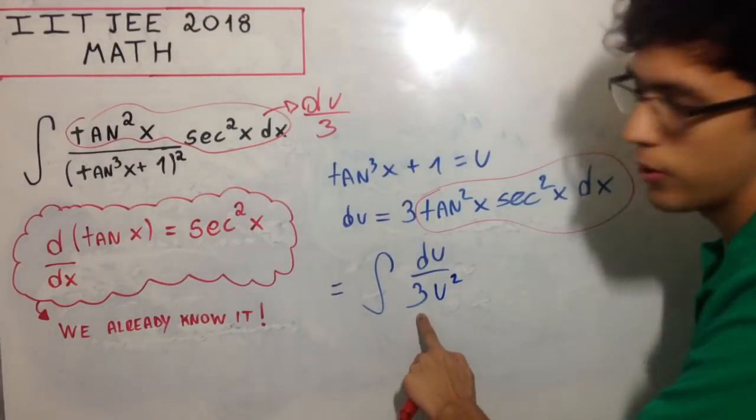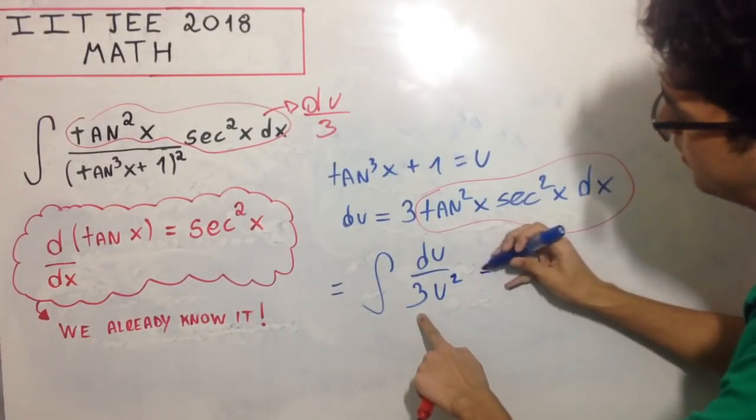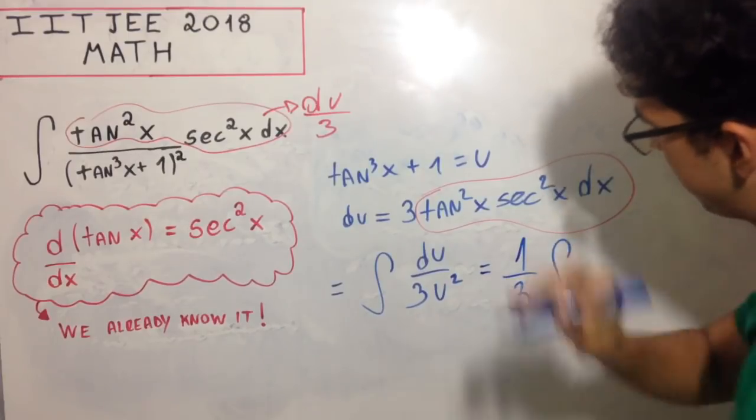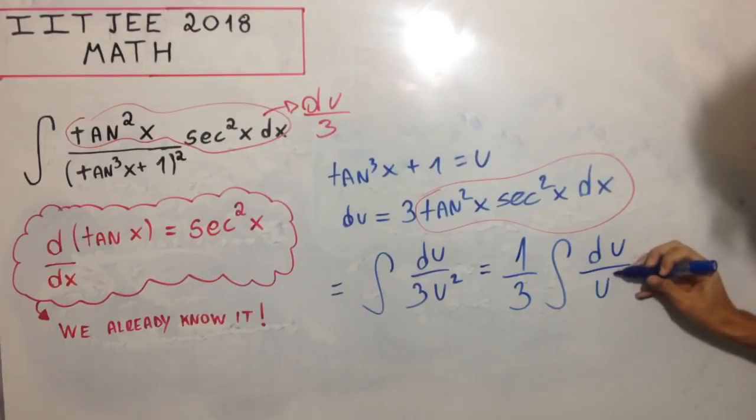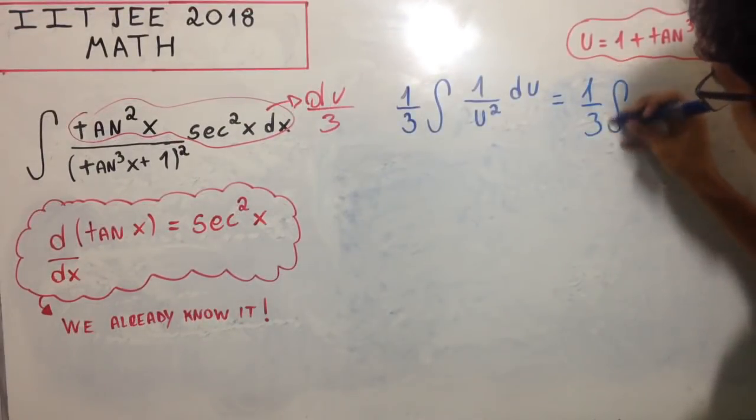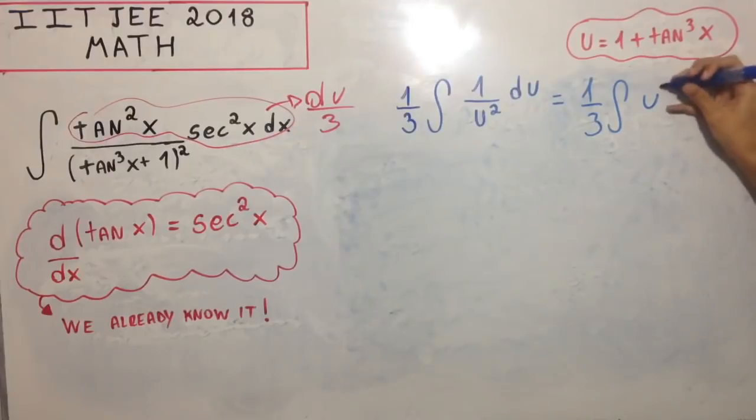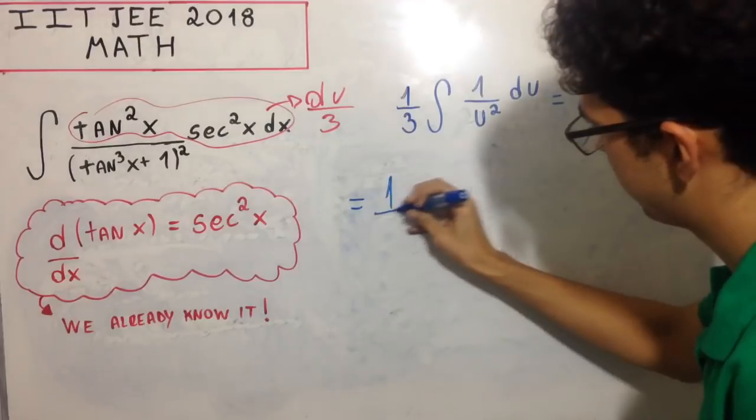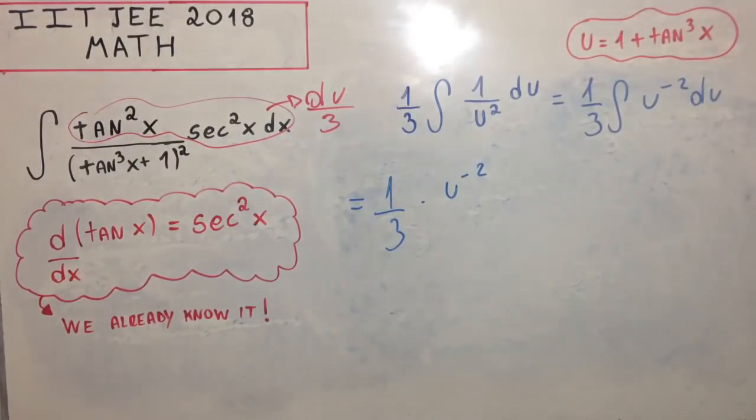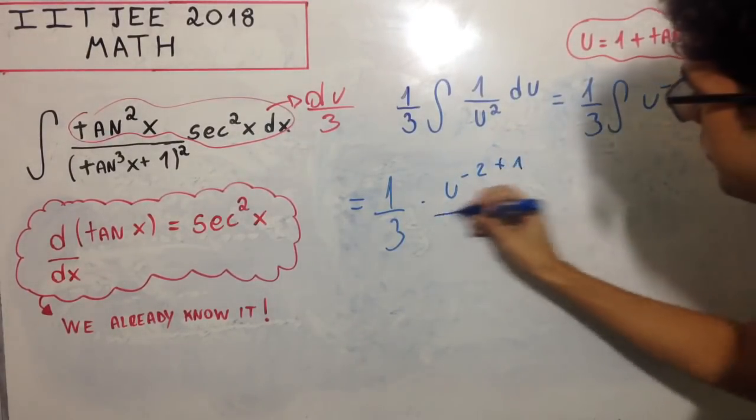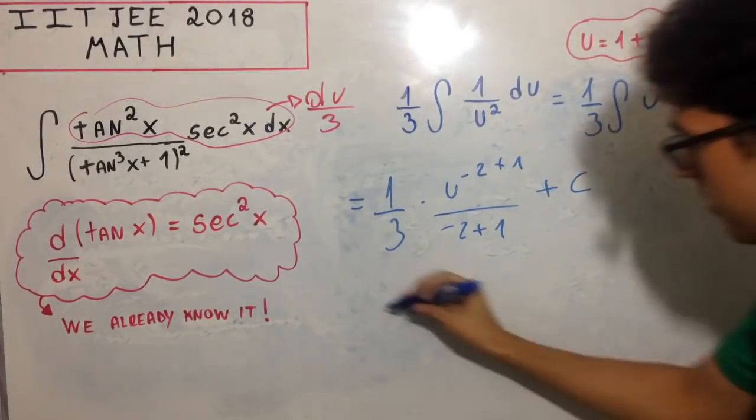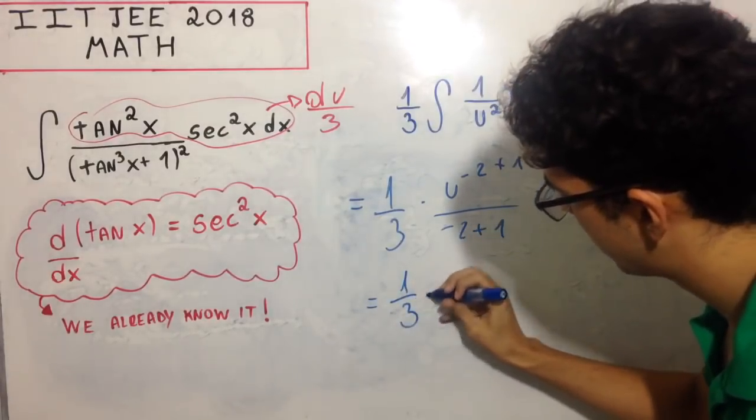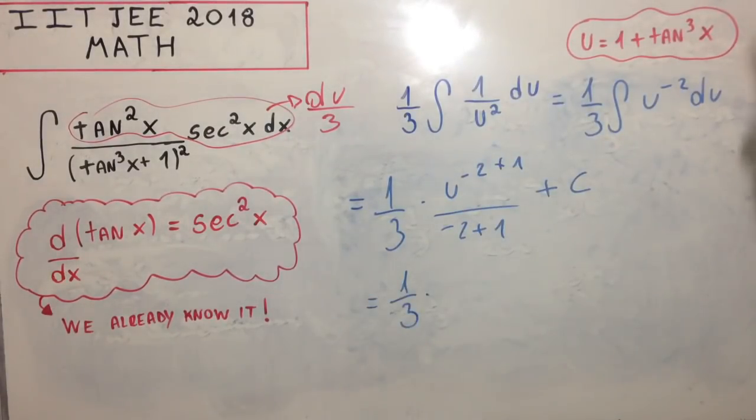So this equals du/3, which is the integral of du/(3u²). This is a constant, so I can take 1/3 out of the integral. We have the integral of u⁻² du, which equals u⁻²⁺¹ divided by (-2+1) plus C. That's u⁻¹ divided by -1 plus C.